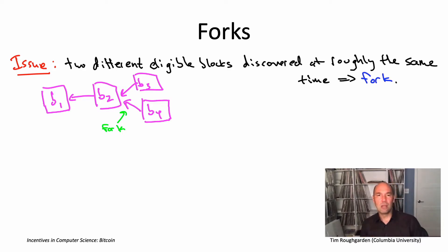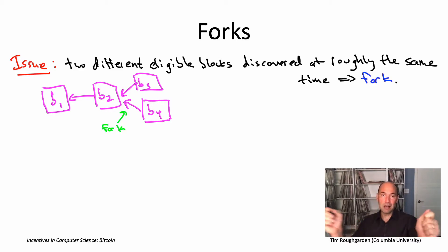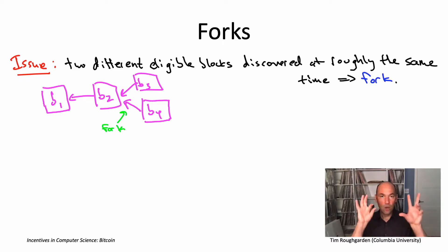Another reason we have to resolve this ambiguity is that later miners need to figure out what they should be extending. If I'm a miner trying to come up with a new eligible block B5, part of my block requires referencing a previous block, and there's ambiguity about whether I should reference B3 or B4. So when there's a fork — two blocks pointing to the same preceding block — the protocol needs to specify a way to break the tie and determine which is the correct extension of the blockchain.